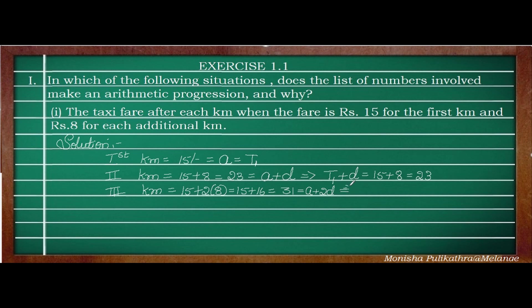In alternate method, T1 = 15, T2 = 23, and the third term T3 = T2 + D = 23 + 8 = 31. For 4 kilometers: A + 3D = 15 + 3×8 = 15 + 24 = 39.